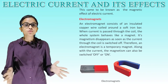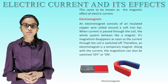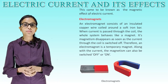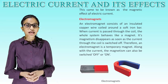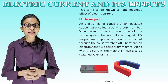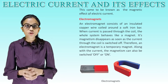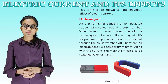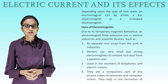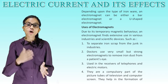Electromagnets. An electromagnet consists of an insulated copper wire coiled around a soft iron bar. When current is passed through this coil, the whole system behaves like a magnet. Its magnetism disappears as soon as the current through the coil is switched off. Therefore, an electromagnet is a temporary magnet — its magnetism can be switched on or off. Depending upon the type of iron core, an electromagnet can be either a bar electromagnet or a U-shaped electromagnet.